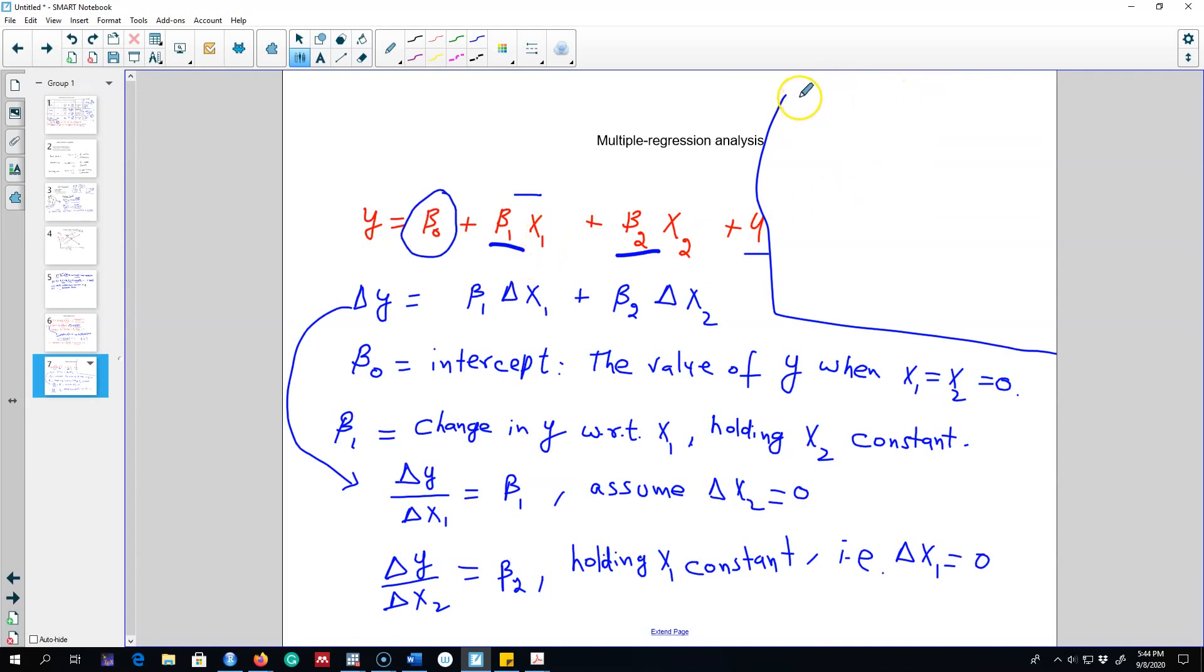We're going to make the same assumption that the expected value of u given x1 and x2 is 0. This assumption is also called zero conditional mean assumption.